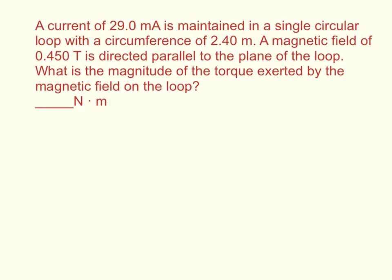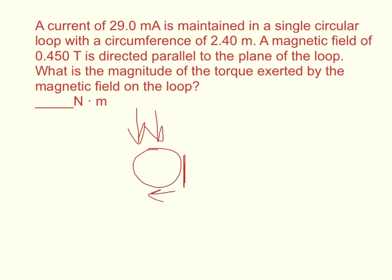Your first inclination is going to be to say this is parallel, and so it must be zero. But let me explain why it's not. You have a loop of wire, and you have a magnetic field going straight and parallel with it. Well, right here it's actually parallel, but if the current is moving around the loop, then once the magnetic field gets to this point, it's at a 90-degree angle with the current.